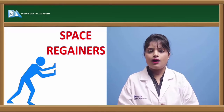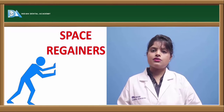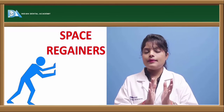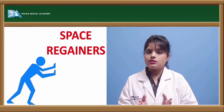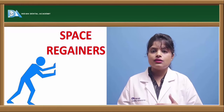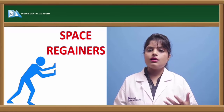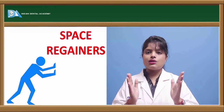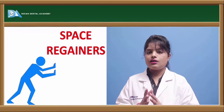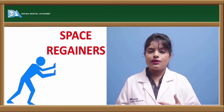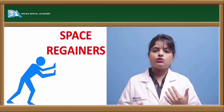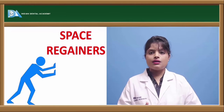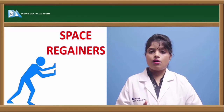Space regainers, as the name suggests, aim at regaining lost space. Space can be lost due to early loss of primary teeth — for example, early loss of the primary first molar or primary second molar. This causes adjacent teeth to tip into the space created, which also hampers the eruption of the successors or premolars into the oral cavity. Space maintainers are used to prevent this, but if space is already lost, we go for space regainers.